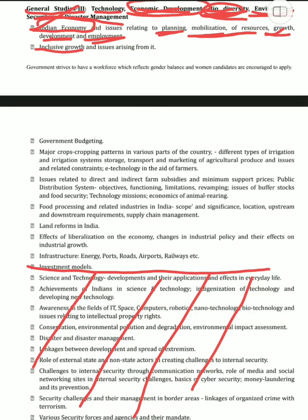Then we have inclusive growth and issues arising from it — its advantages, disadvantages, challenges, implementation, strategy, and what are the issues arising from it and how they can be addressed. What could be the possible outcomes — everything. Then there is government budgeting: what the government is focusing on in its budget, what deficit financing they are following and why. The economic survey covers our government budgeting.